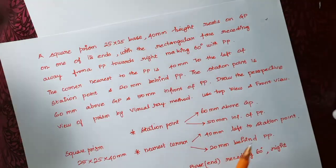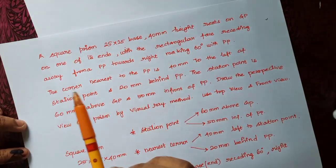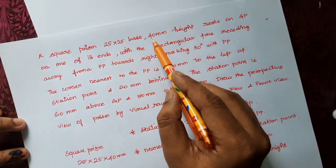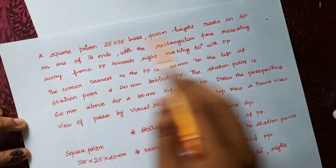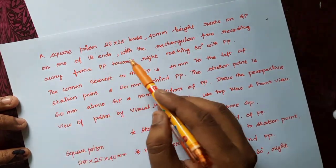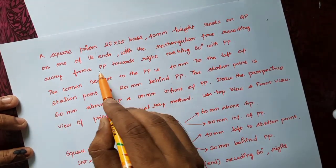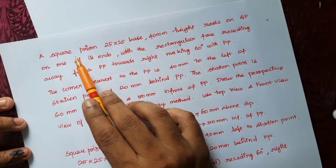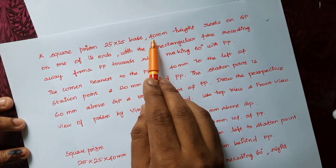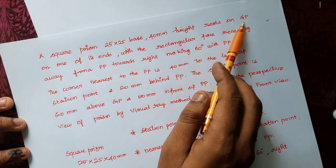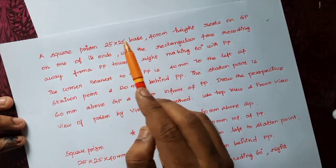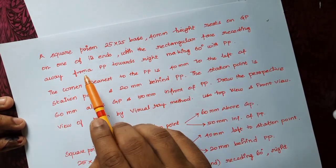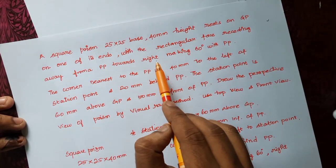Hello, in this video we are going to see how to draw a square prism in perspective view. A square prism 25×25 base, 40 mm height, rests on the ground plane on one of its ends, with a rectangular face residing away from the picture plane towards right, making 60 degrees with the picture plane.